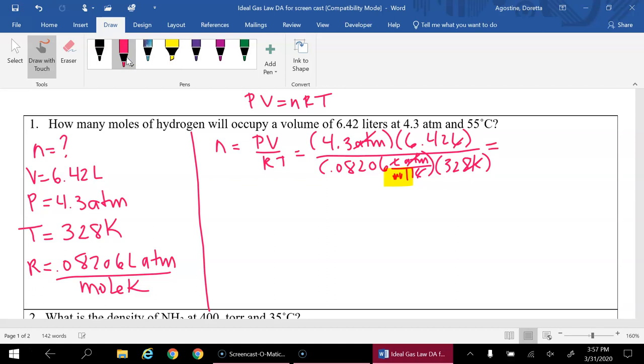And when we plug it into our calculator, we get, which has too many significant digits. So here we only need 2, so n is going to round to 1.0 moles.